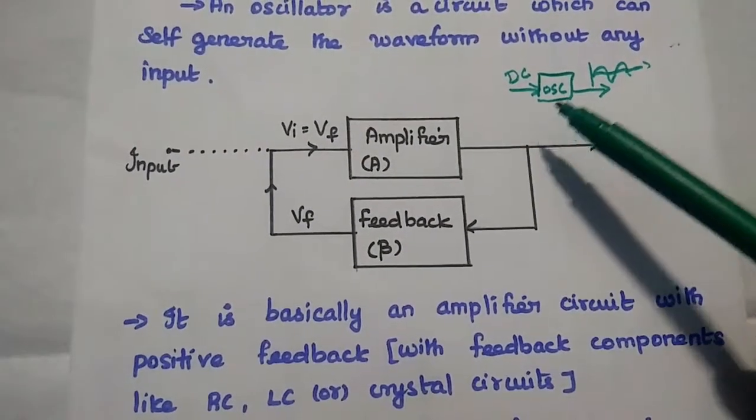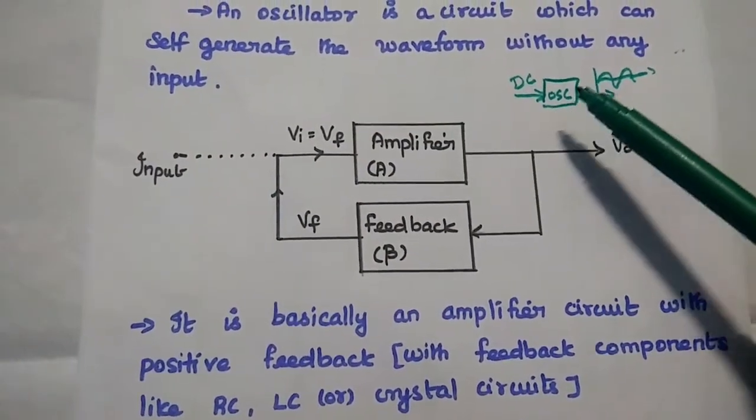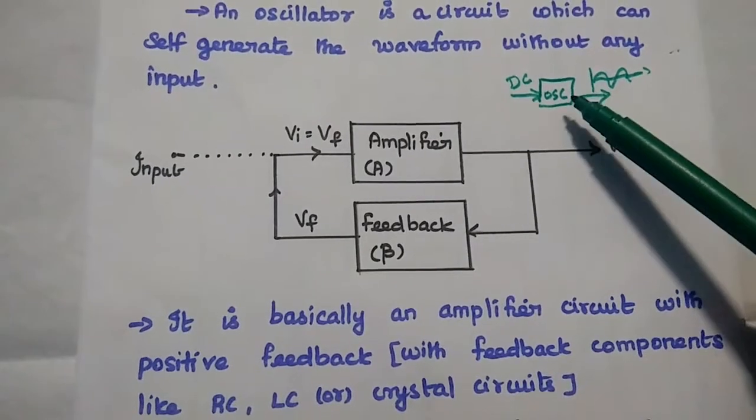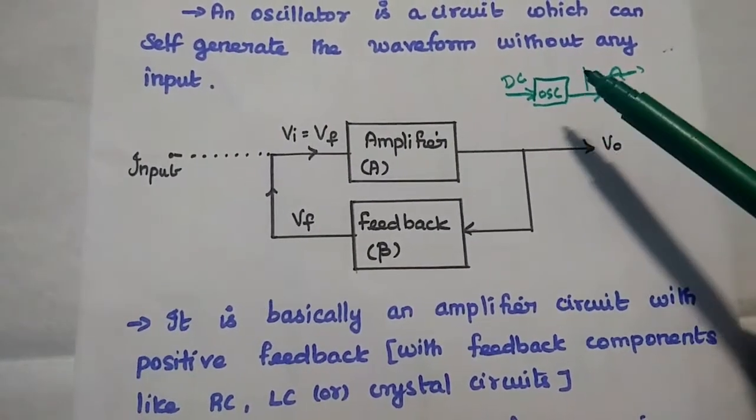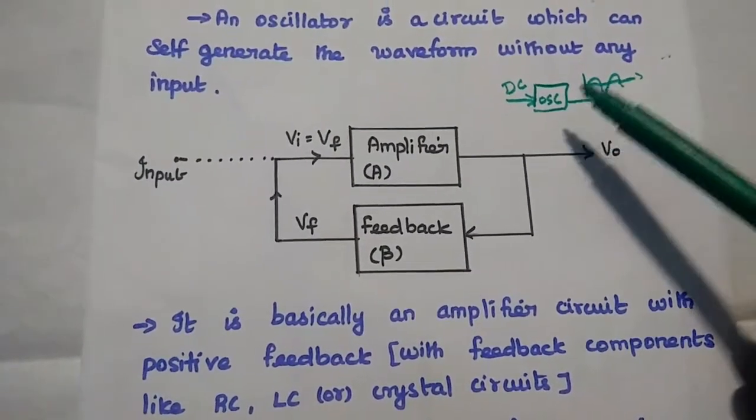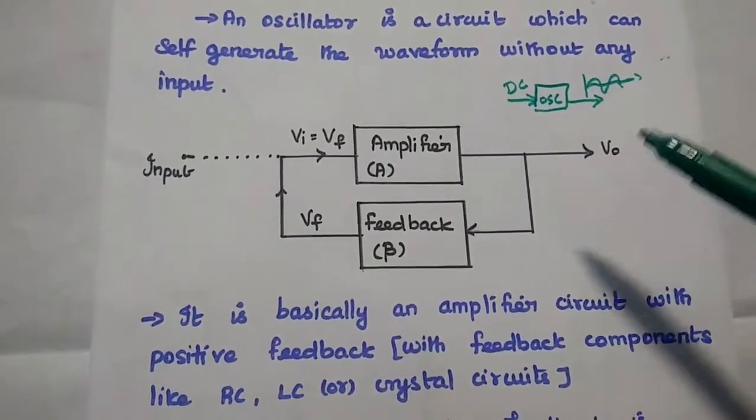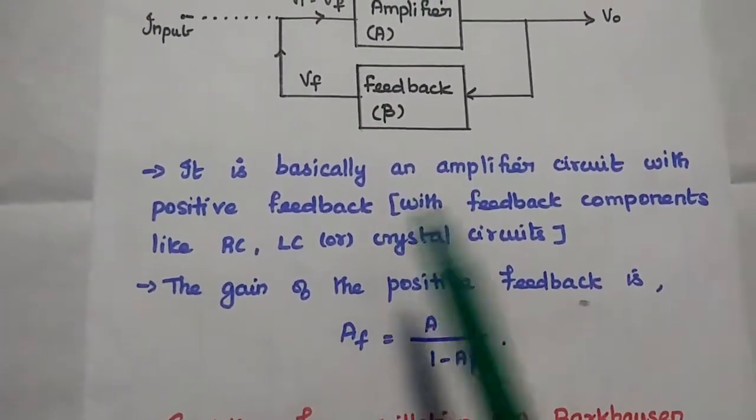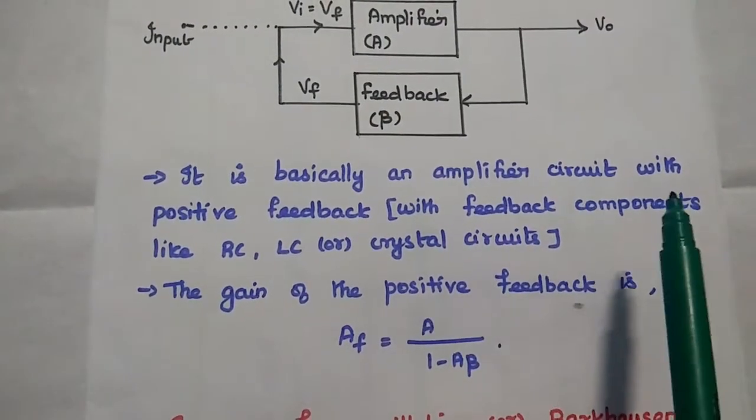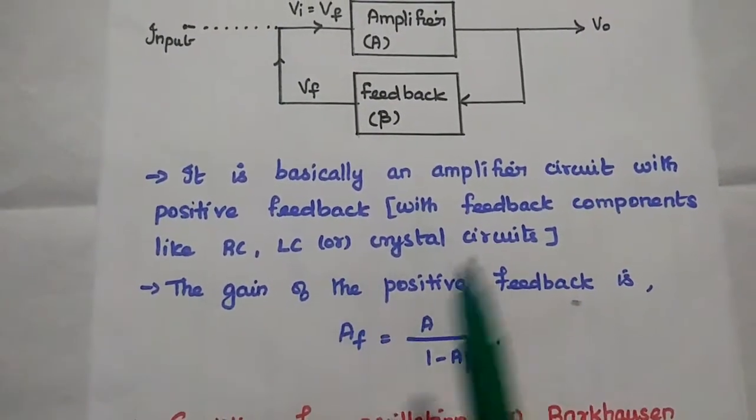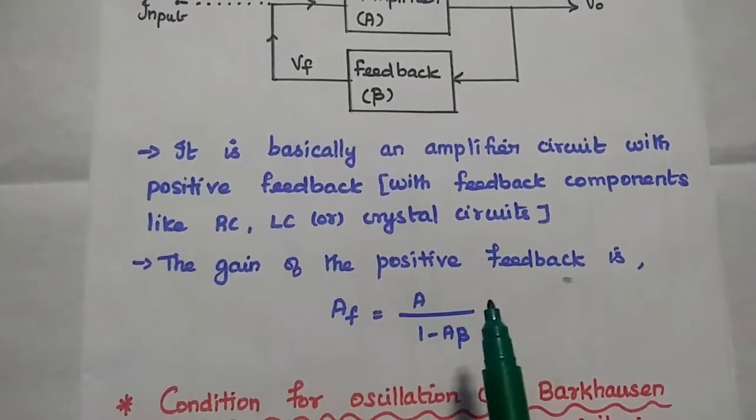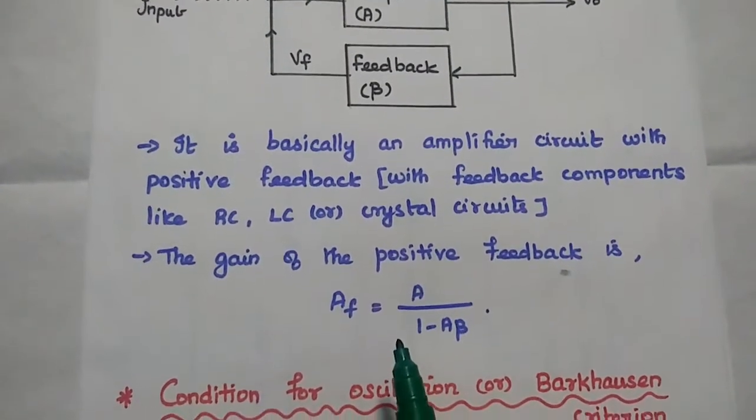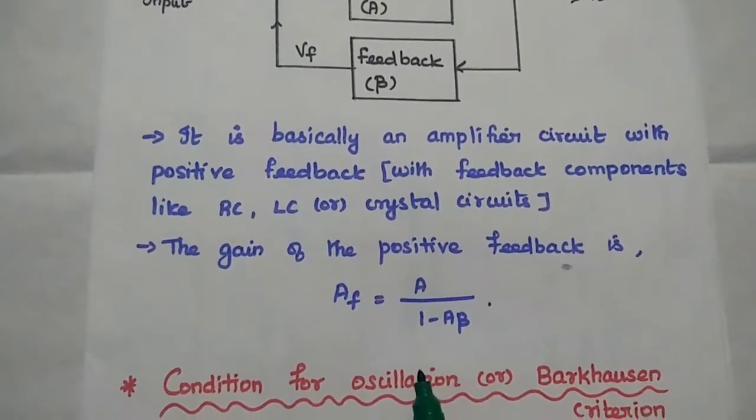So we are not giving any input signal. We are simply giving the DC supply voltage, which is required for the operation of active devices used in this electronic circuit. So oscillator is basically an amplifier circuit with positive feedback. The gain of the positive feedback is AF equals A by 1 minus A beta.